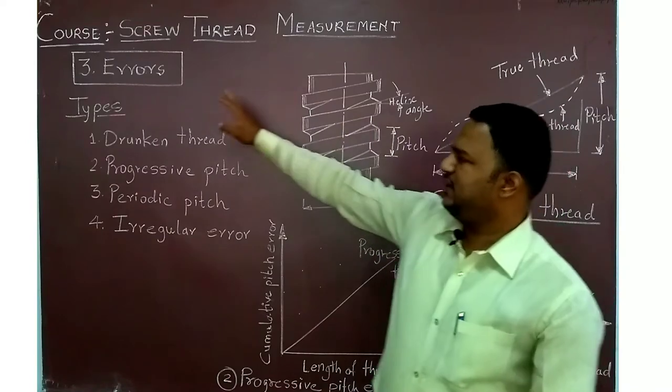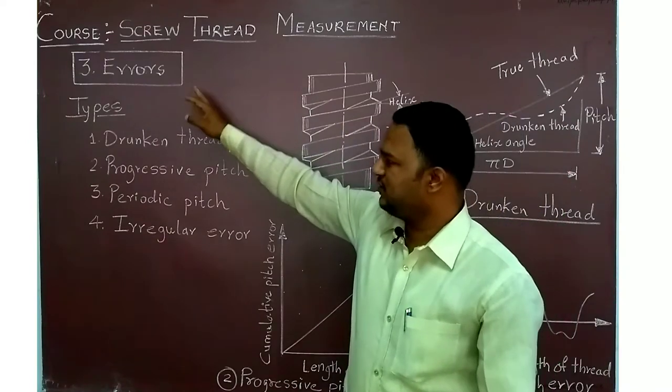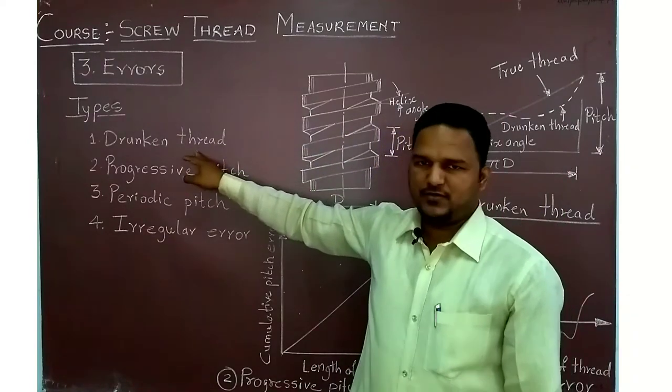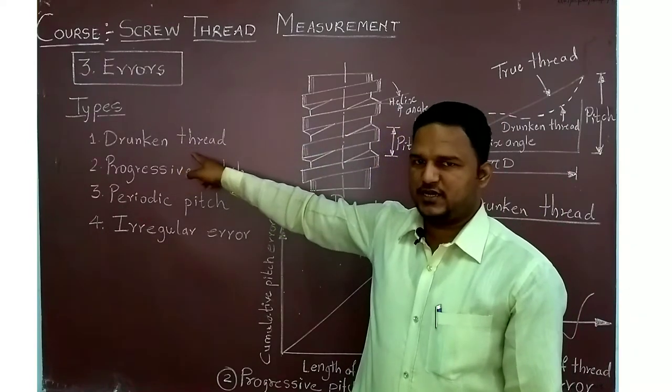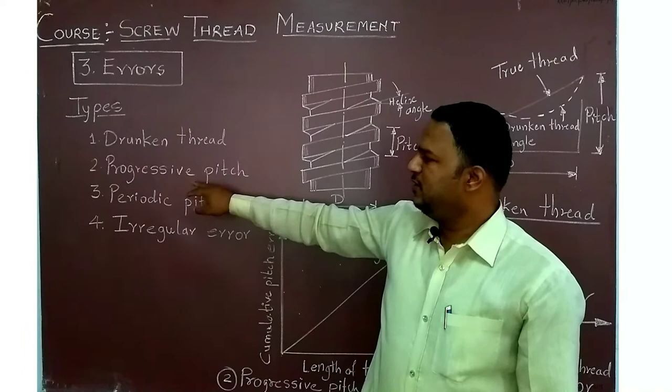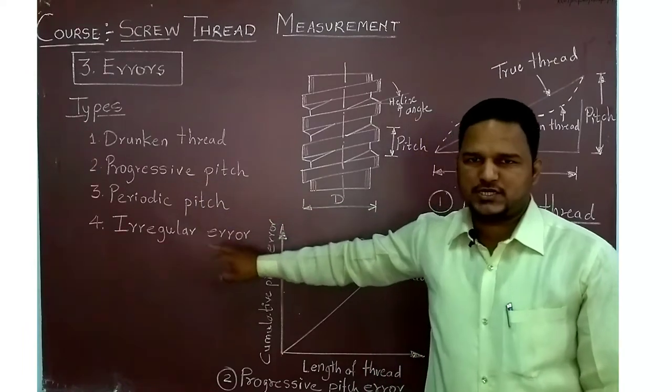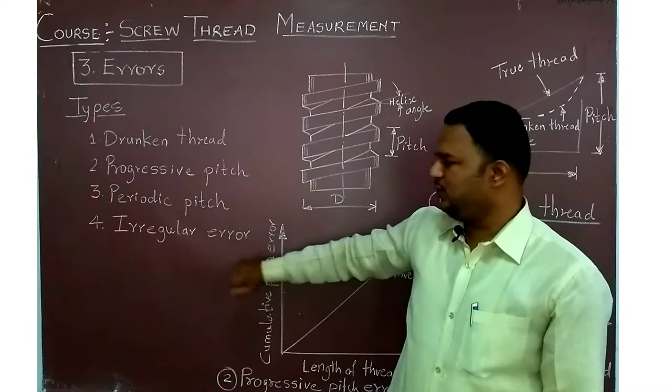In today's lecture on errors, we will cover the types of errors: drunken thread, progressive pitch, periodic pitch, and irregular error.